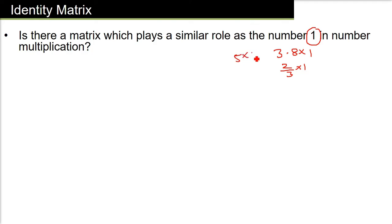So the actual number comes back. Is there any equivalent, this kind of like one equivalent in matrix? Yes, there it is. And that is called the identity matrix.